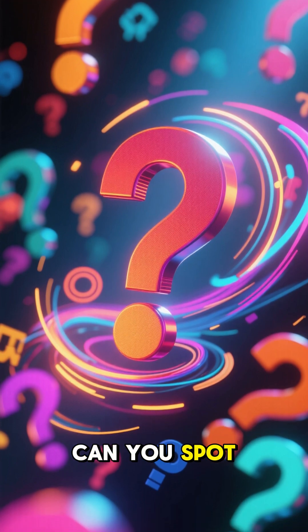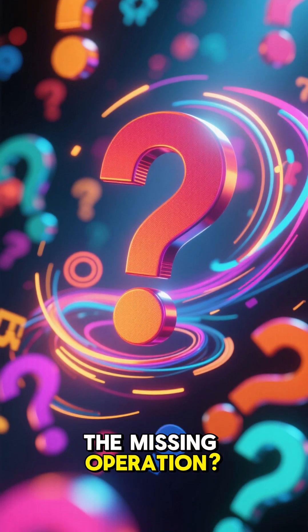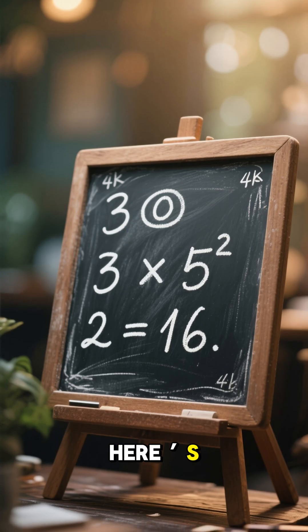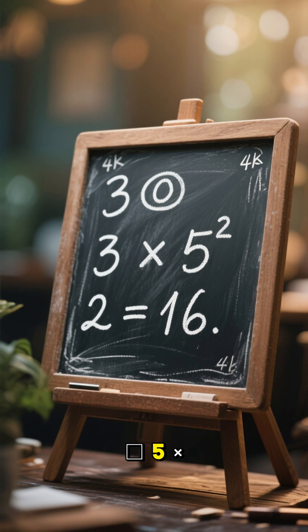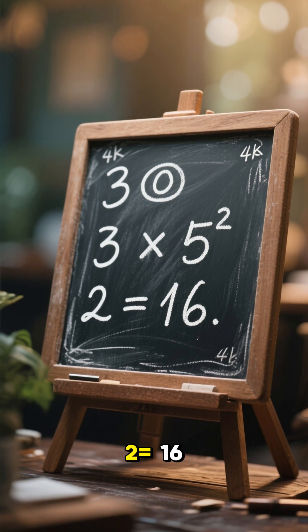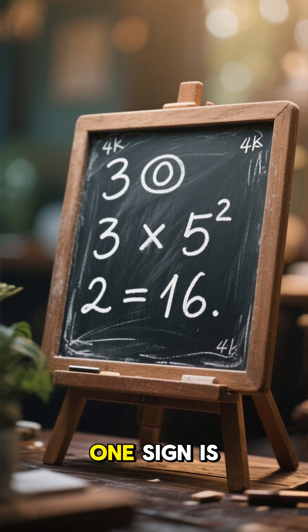Math puzzle time. Can you spot the missing operation? Here it says: 1 □ 3 □ 5 × 2 = 16. One sign is missing — what goes in the box?